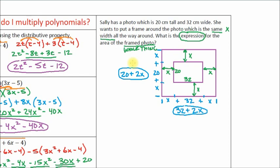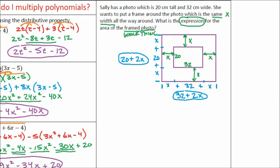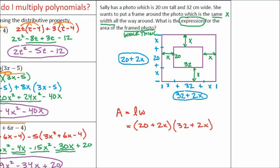You've really taken care of the difficult part of this question — finding the expression for the height of the whole frame, 20 plus 2x, and the width of the whole frame, 32 plus 2x. All we have to do now is put those together. The area of the whole thing is going to be the length times the width. You can pick either one to be length or width — multiplication is commutative. So our area expression is (20 plus 2x) times (32 plus 2x). Now all you have to do is multiply two binomials.